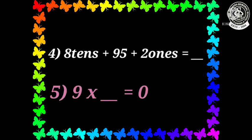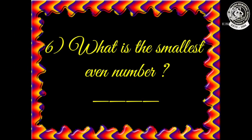Now let us see question number 5: 9 multiplied by dash equals 0. That means by which number will we multiply 9 so that the answer we get is 0. Now let us see question number 6: What is the smallest even number? Children, even numbers start from 2. So the smallest even number will be 2.